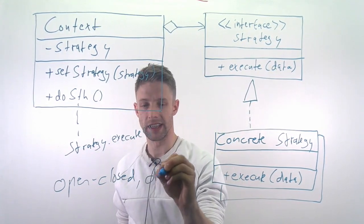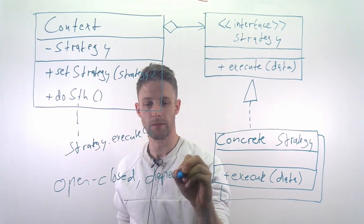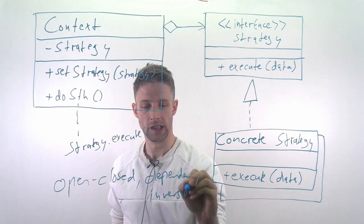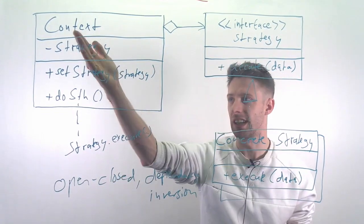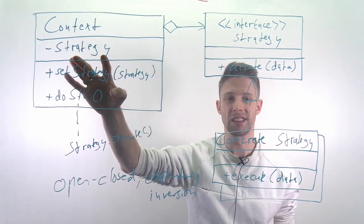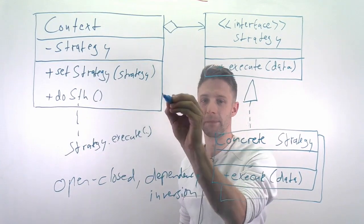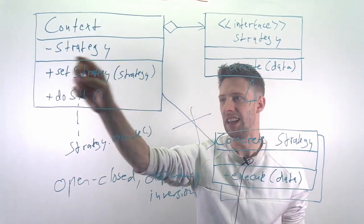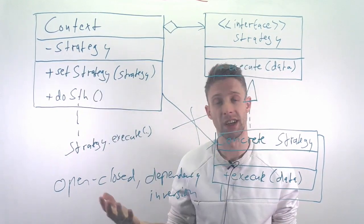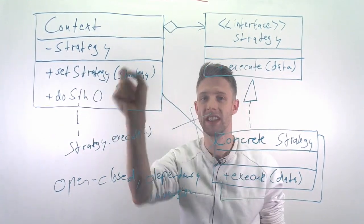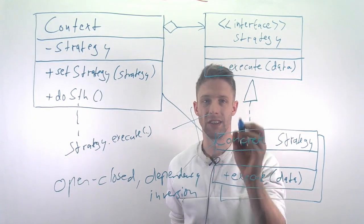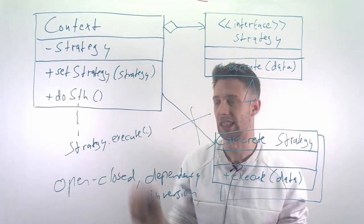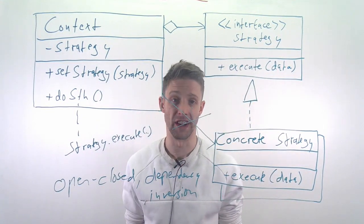The other thing we have here is a classic case of dependency inversion and that's because the context does not have a concrete strategy set. It doesn't have a dependency like this to a concrete case, instead it has a method that allows you to set the strategy at runtime, so we basically invert the dependency here. We decide which concrete strategy we want, the context does not define that.